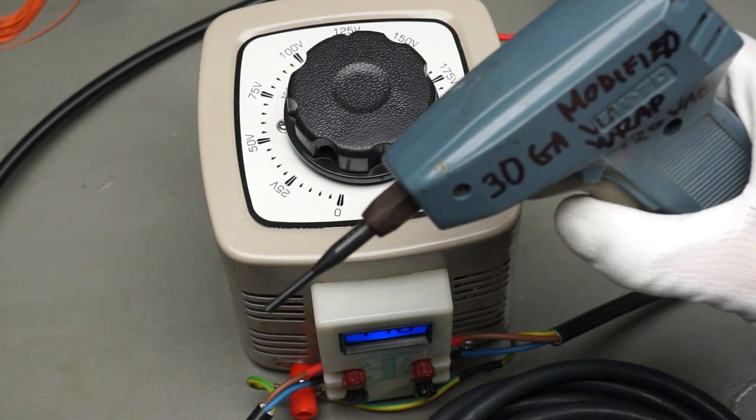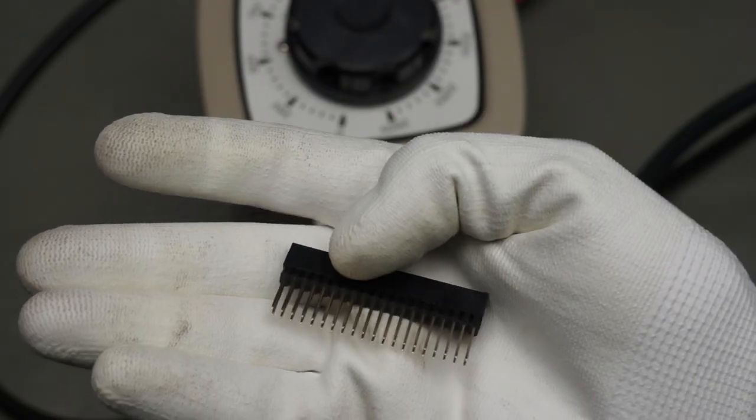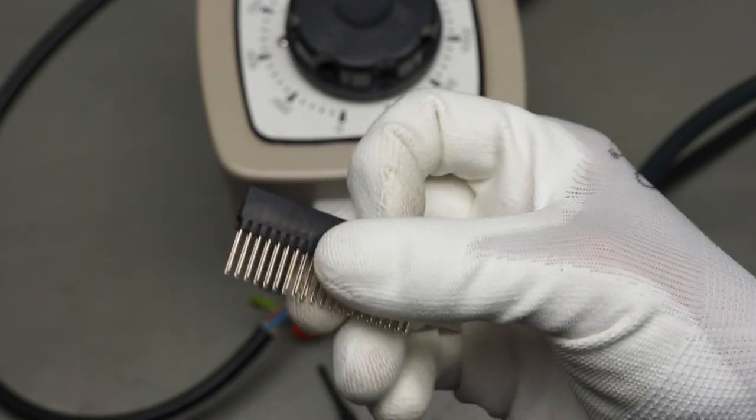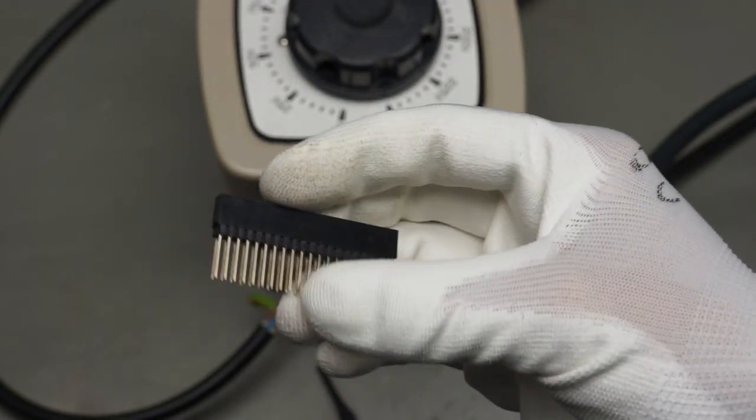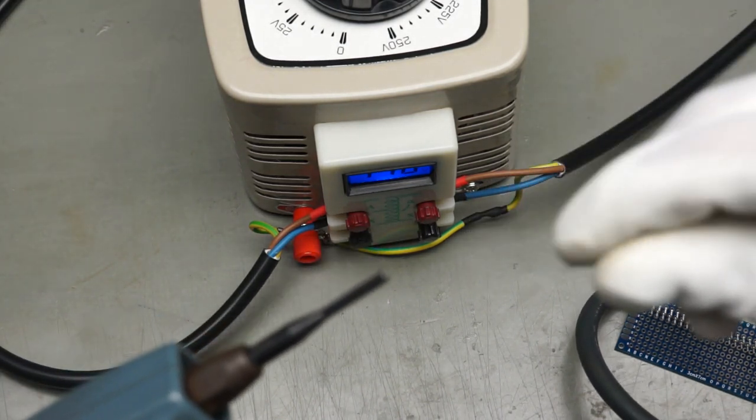It still works. In the meantime I also got two rows headers with wire wrapping legs. It works similar to the hand tool.